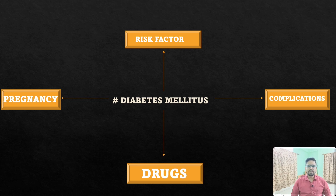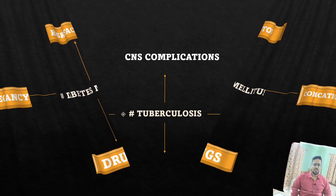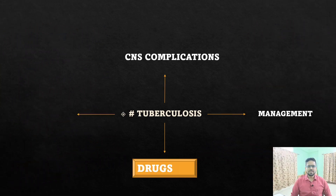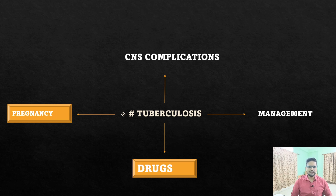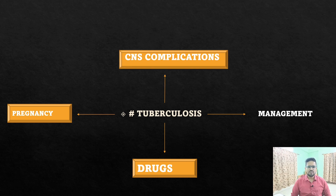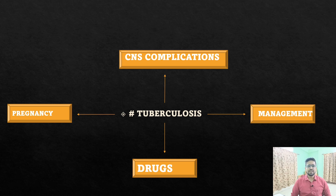The fifth key topic is tuberculosis. You must read the drugs used in tuberculosis, how to manage tuberculosis in a pregnant mother, CNS complications like tuberculous meningitis — which is asked repeatedly — and the overall management of tuberculosis. These are the five topics repeatedly asked in the last five years. The subtopics I've mentioned are the most important things you must cover before going for the exam.